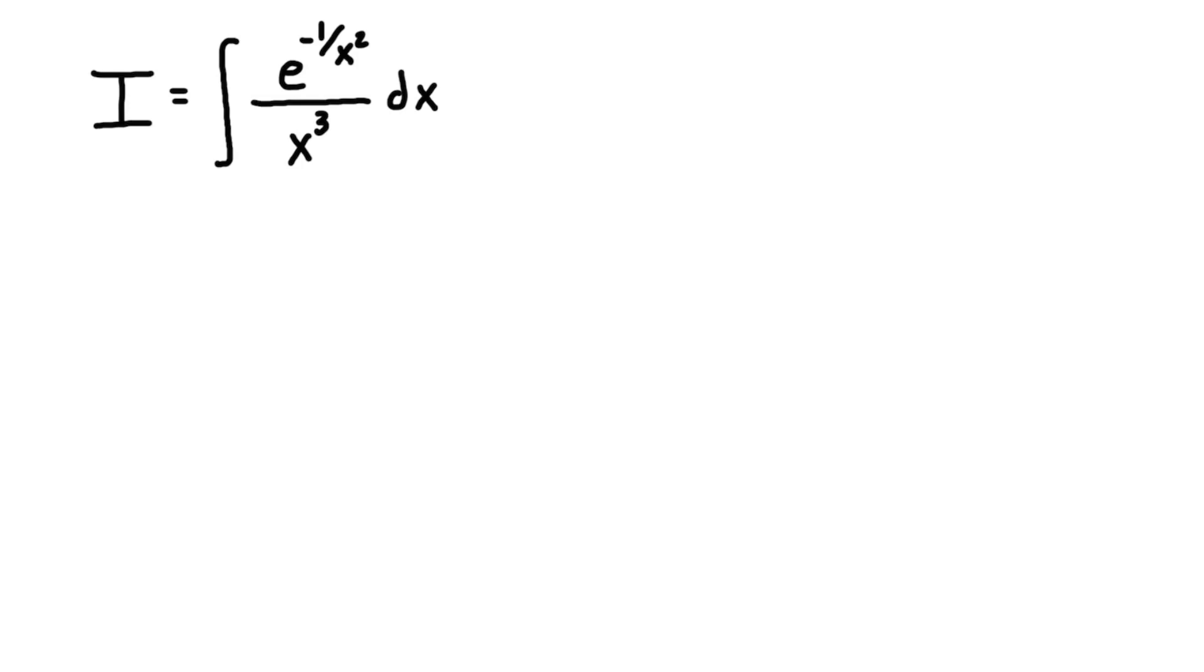So we can write that over here, let's define u as equal to negative 1 over x squared. So we can rewrite our integral now with our substitution for u, so we're going to have e to the power of u over x to the power of 3 dx.